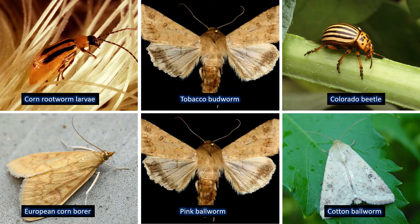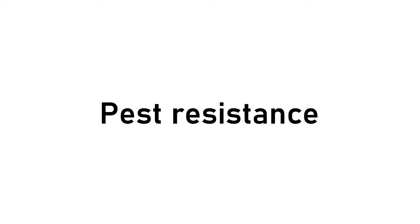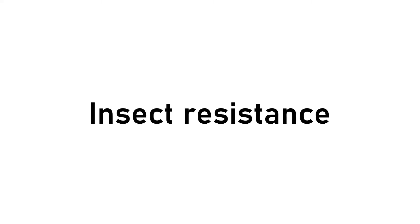Commercialized targets include the Colorado Beetle, which belongs to Coleoptera; tobacco budworm and cotton bollworm, which belong to Lepidoptera; pink bollworm, which belongs to Lepidoptera; European corn borer, which belongs to Lepidoptera; and corn rootworm larvae, which belong to Coleoptera. Continuous efforts are in progress to widen this range of insects. This list clearly indicates that pest resistance means essentially insect resistance.